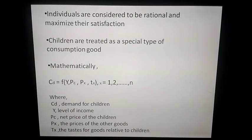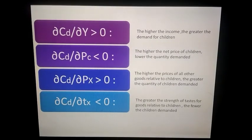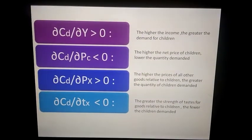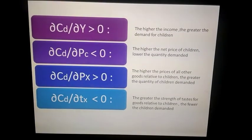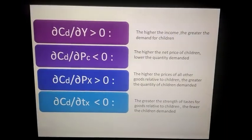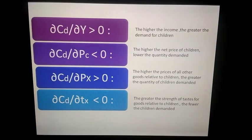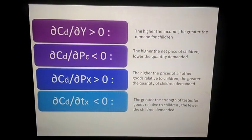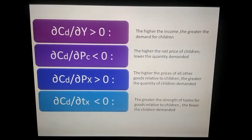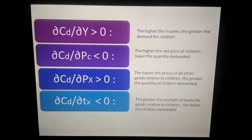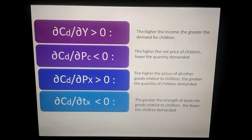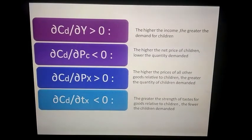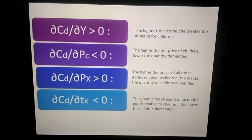Now let's study the relationship of demand with each element. The differentiation of children demanded with respect to income is greater than zero, meaning there is a direct relationship between income and the number of children demanded — as income increases, the demand for children also increases. The differentiation of children demanded with respect to the price of the child is less than zero, meaning there is an inverse relationship — as the net price of bearing a child increases, the lower the quantity of children demanded.